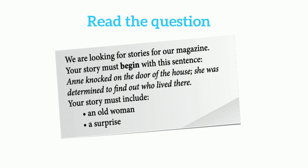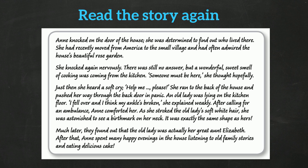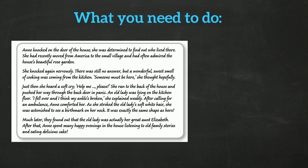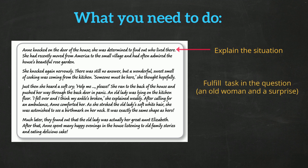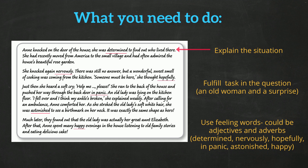Read this question: 'While looking for stories for our magazine, your story must begin with this sentence: Anne knocked on the door of the house. She was determined to find out who lived there. Your story must include an old woman and a surprise.' Spend some time to read the whole story. Let's look at what you need to do. First, you have to explain the situation — this can be done in the first paragraph. Next, make sure you fulfill the task requirement, where you have to write about an old woman and a surprise. You also have to use a lot of feeling words — adjectives and adverbs — like determined, nervously, hopefully, in panic, astonished, and happy.